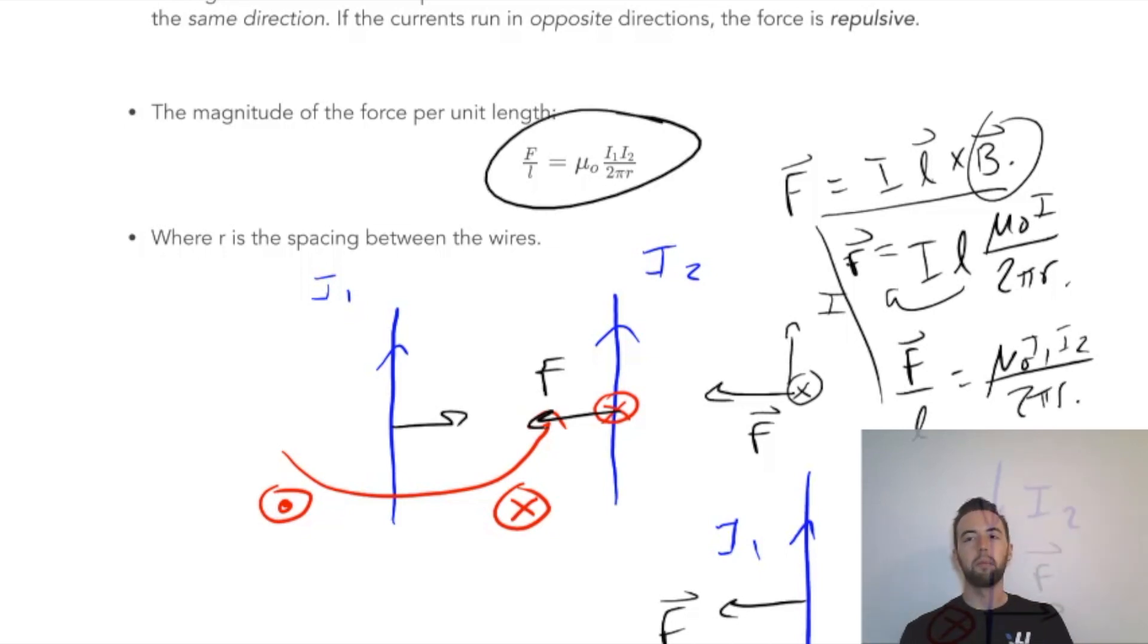So what we'll often do in questions like this, is instead of talking about the force, we'll talk about the force per unit length exerted on the wires. So what you find then is F divided by L equals mu naught I1 I2 over 2 pi r. So that's where this formula comes from. That's the magnitude of the force per unit length that a wire exerts on the other wire. R is the distance between the two wires.